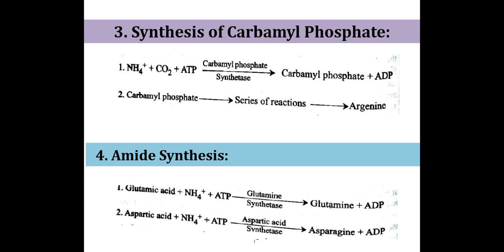The third pathway of ammonia assimilation is synthesis of carbamyl phosphate. Carbamyl phosphate is then utilized in a series of reactions to synthesize the amino acid arginine. The reaction is: ammonia plus carbon dioxide plus ATP gives carbamyl phosphate and ADP. This carbamyl phosphate then undergoes a series of reactions producing arginine.